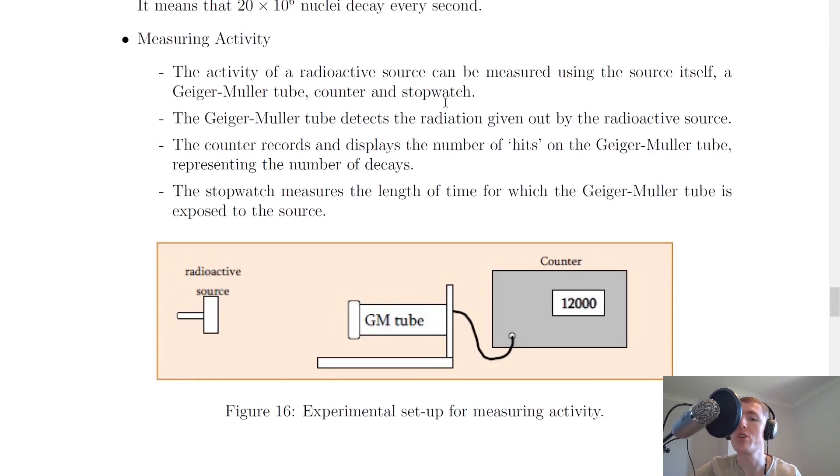The activity can be measured using the source itself, the Geiger-Muller tube, counter, and stopwatch. The stopwatch is the only thing not shown in the picture. The Geiger-Muller tube detects the radiation given out by the radioactive source. The counter records and displays the number of hits on the Geiger-Muller tube.